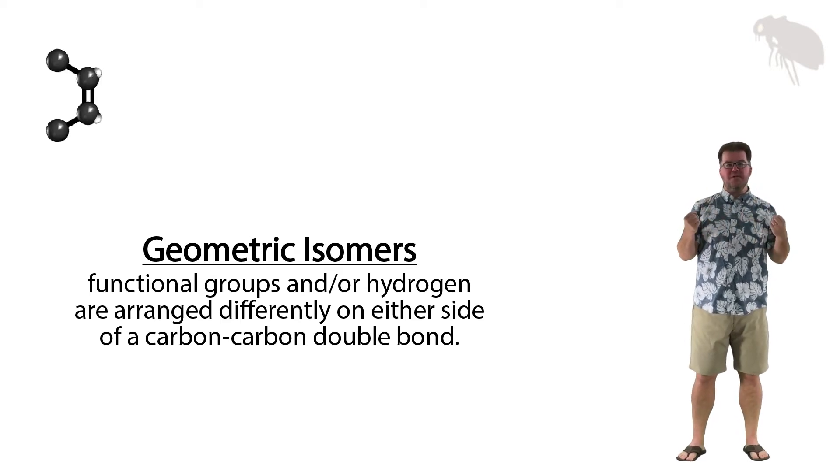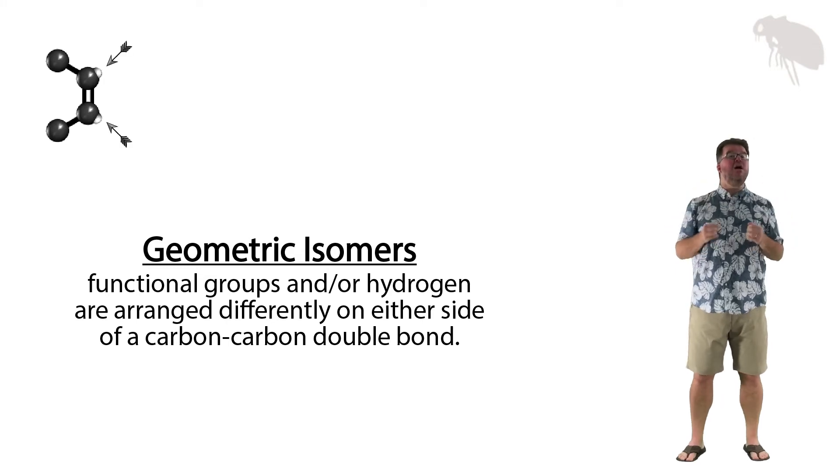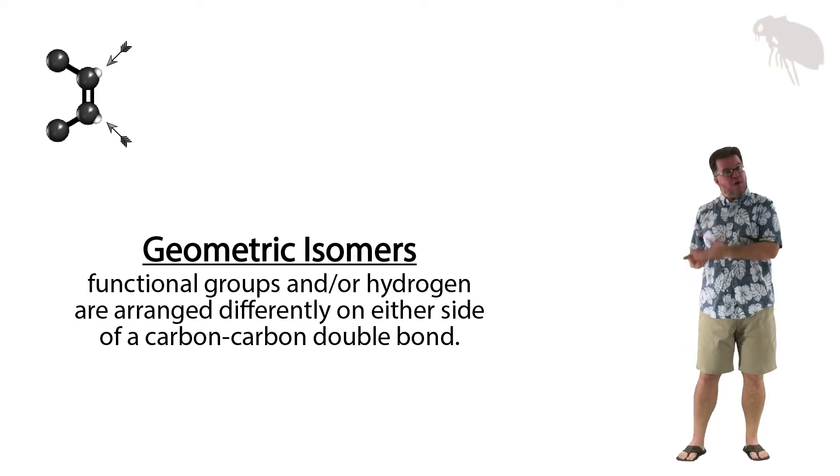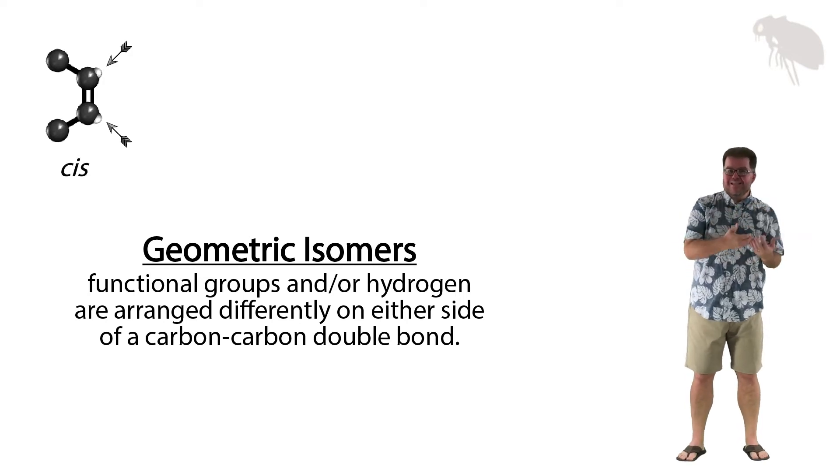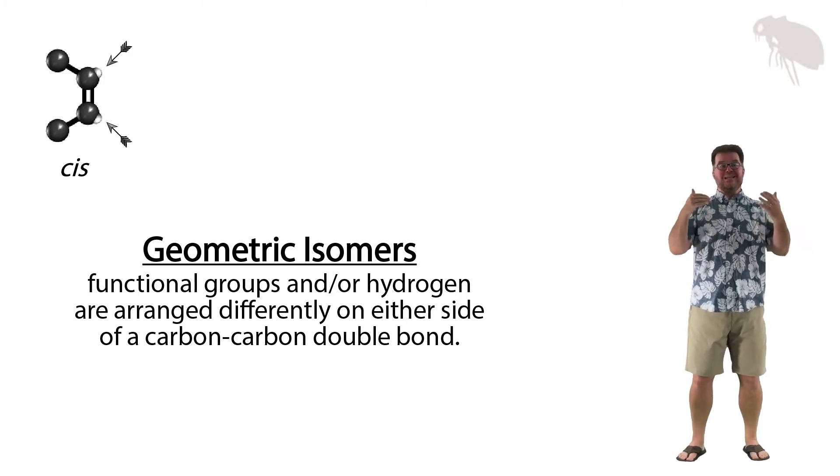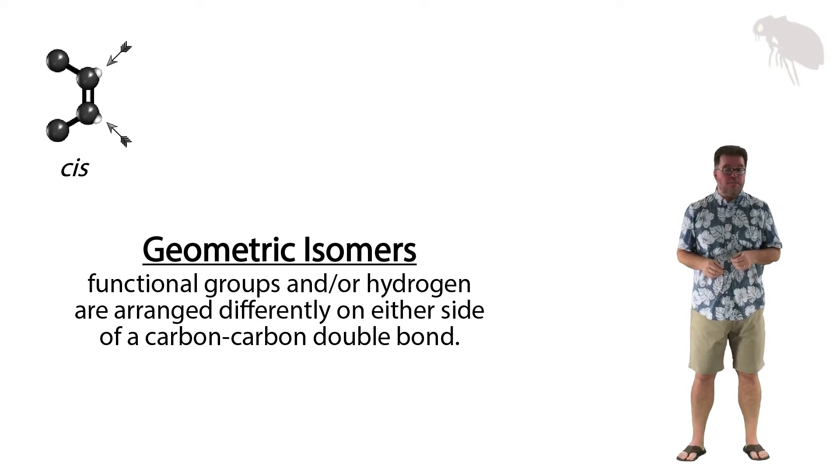Now what we're really interested in is just where these two things are located. Are the two hydrogens, as we see here, located on opposite carbons but on the same side of the double bond? If they're located on the same side of the double bond, we call that a cis geometric isomer, or a cis isomer. The cis here refers to the fact that the hydrogens are on the same side of the double bond as each other.